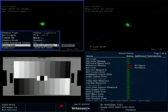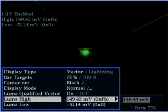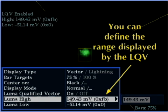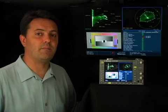An exclusive variation on the vectorscope is Tektronix Luma Qualified Vector, or LQV. This allows you to display just a specific part of the tonal range, like just the deep shadows or just the highlights in the vectorscope, which I find really helps me a lot to balance shots.